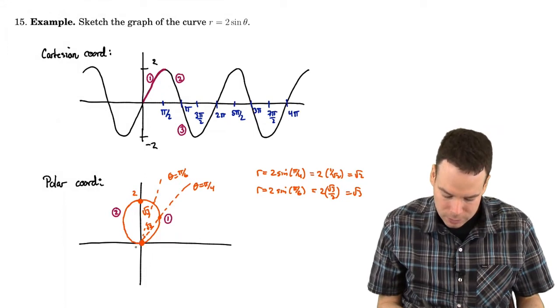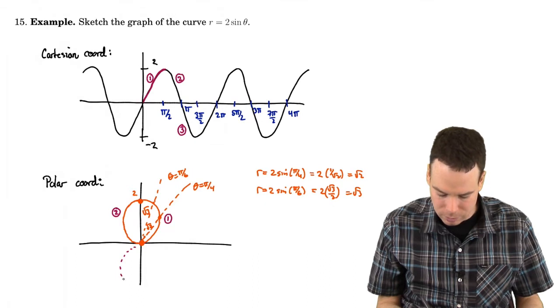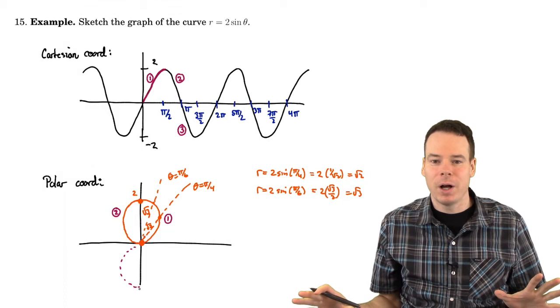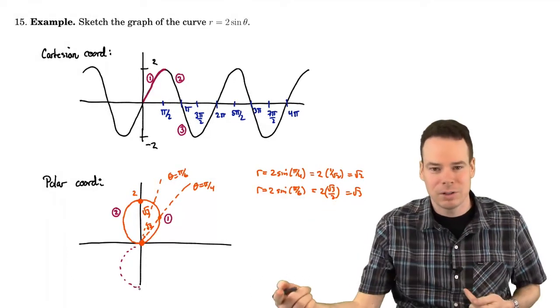If my r value were positive, then it would probably look something like this. You know, it would just trace out what looks, what it looks like above. But my r value is not positive. My r value is negative. So I had to slingshot to the other side of the pole.